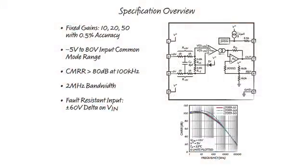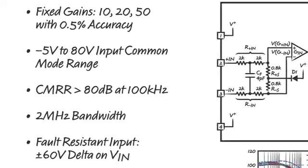The LT1999 is a precision device offered in three gain options: 10, 20, and 50. The gain has 0.5% accuracy, and the part has a worst-case input offset of 1.5 millivolts. The fixed gain options make designing the part simple and also increase performance in many applications.